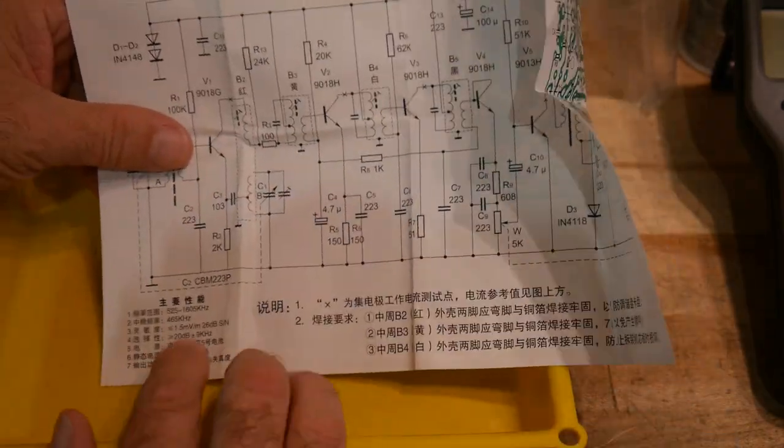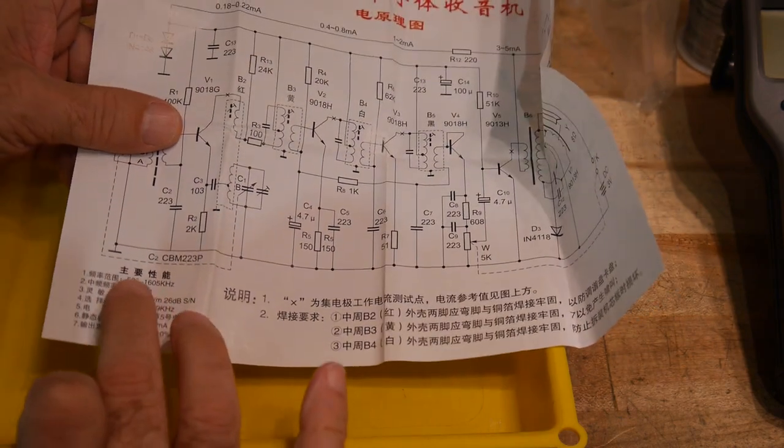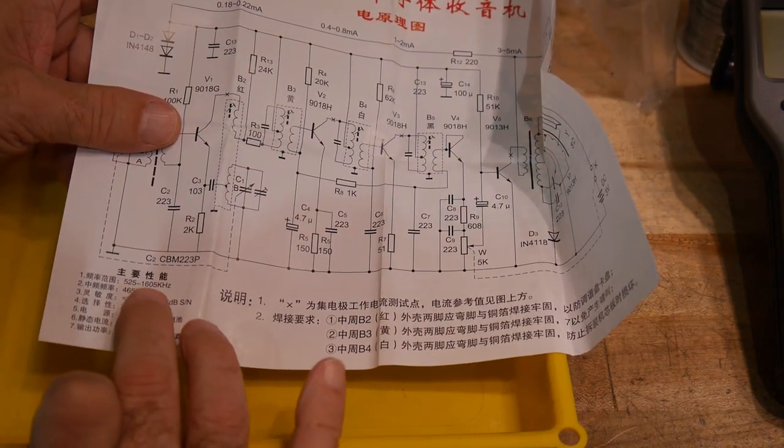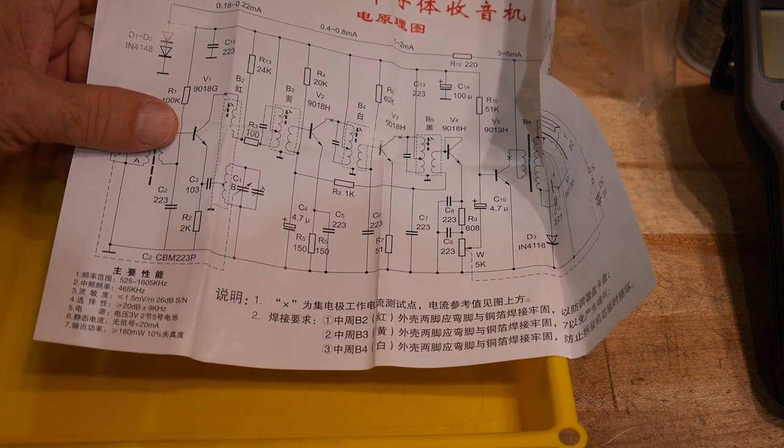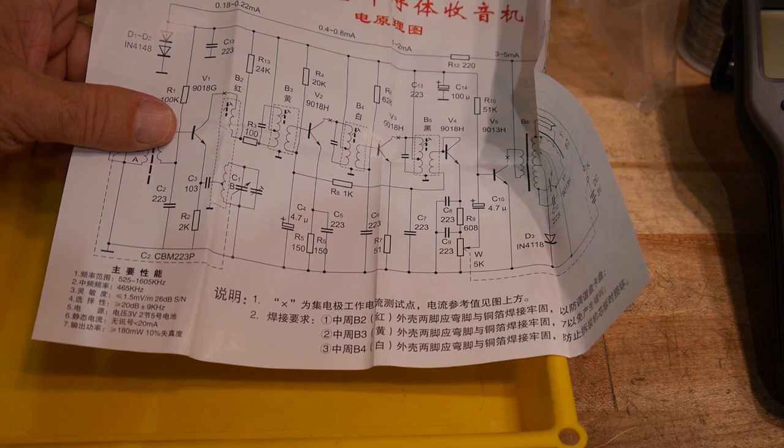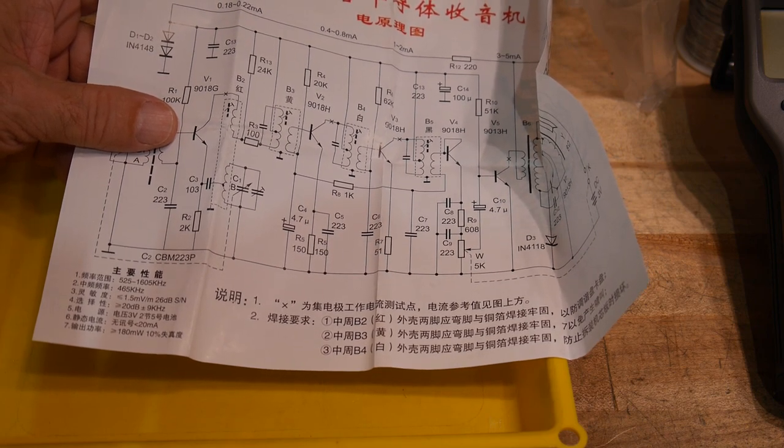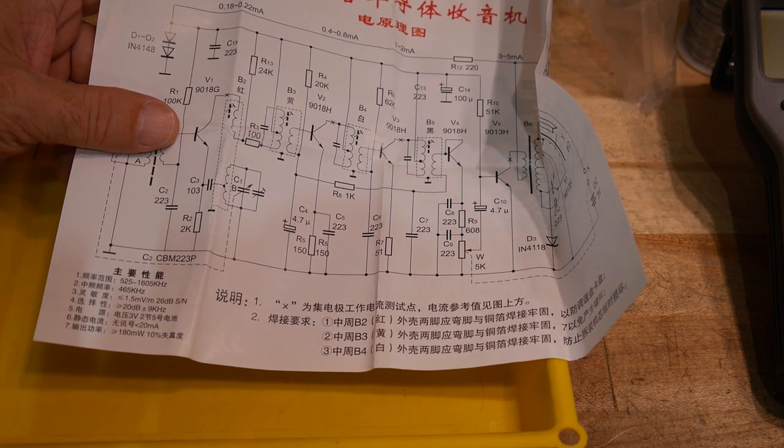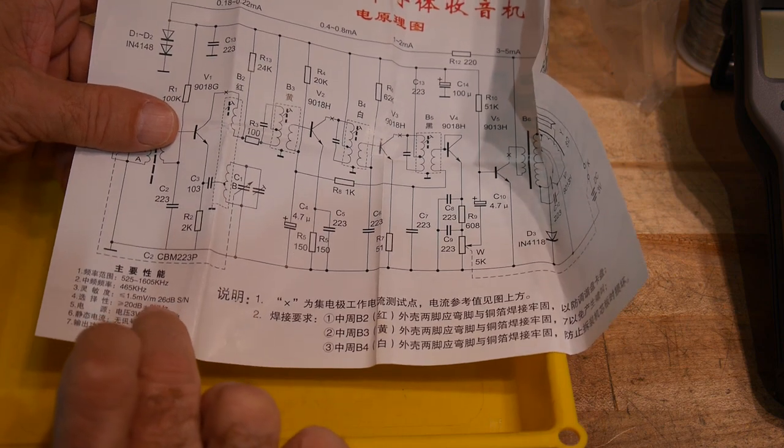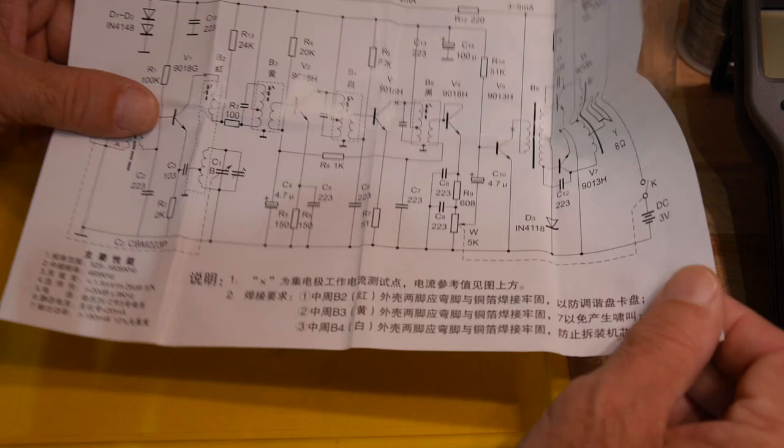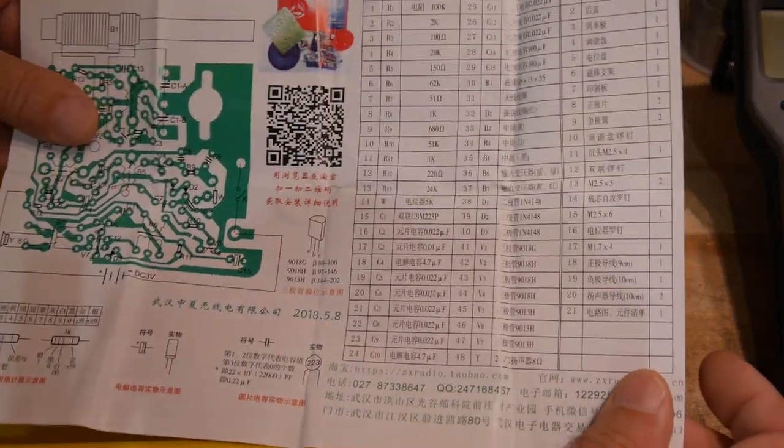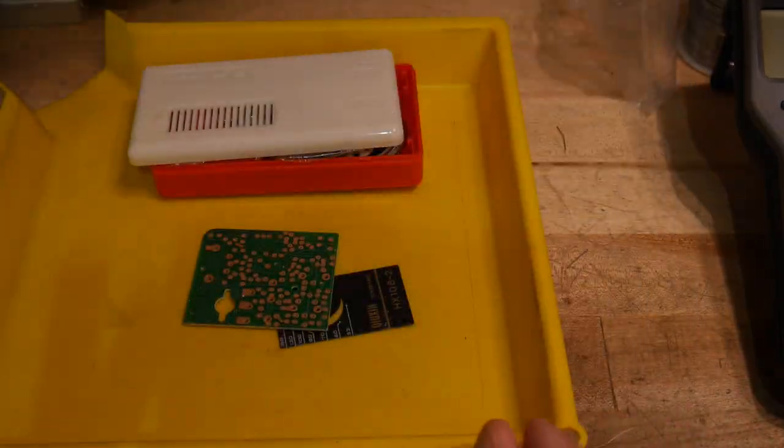Here are the specifications. 525 to 1605 kilohertz AM band, 465 kilohertz IF frequency. That's kind of weird. 465, usually it's 455. 26 dB signals and noise. Yeah, should be interesting. Let's take a look.